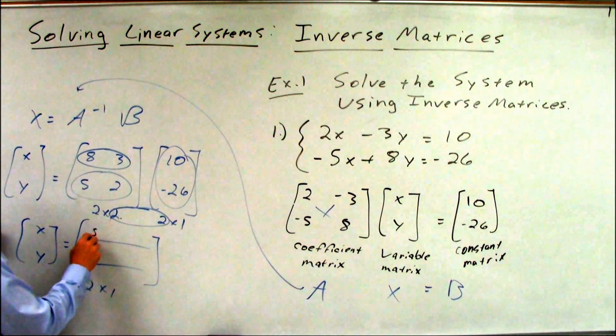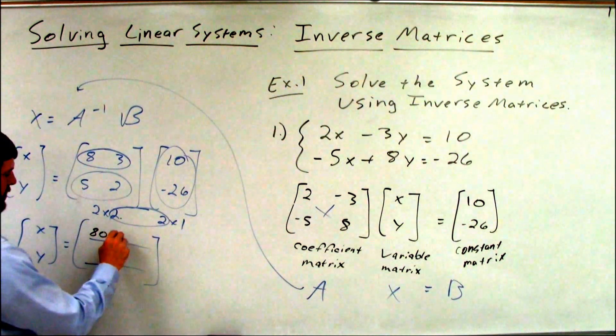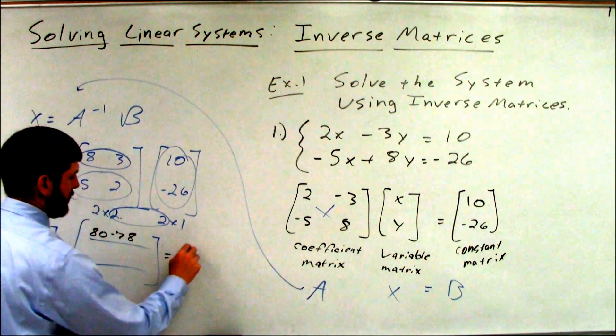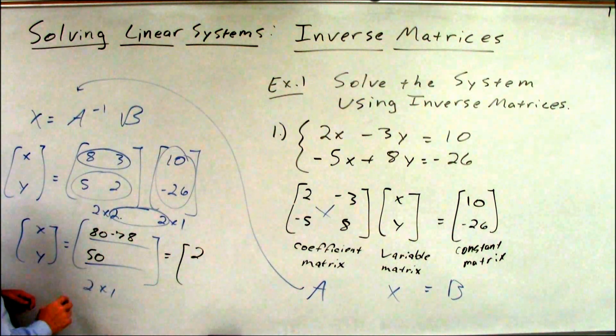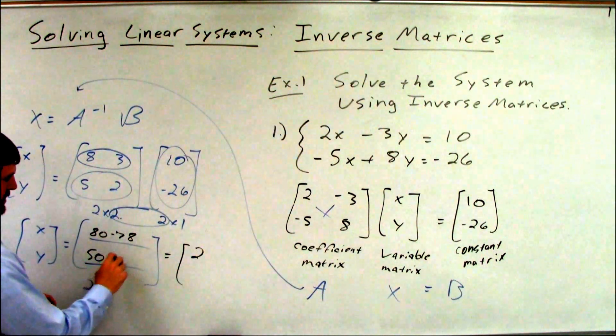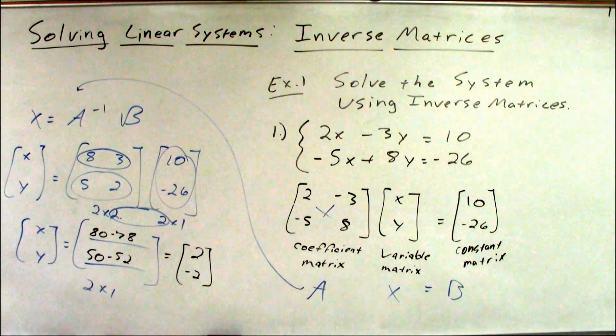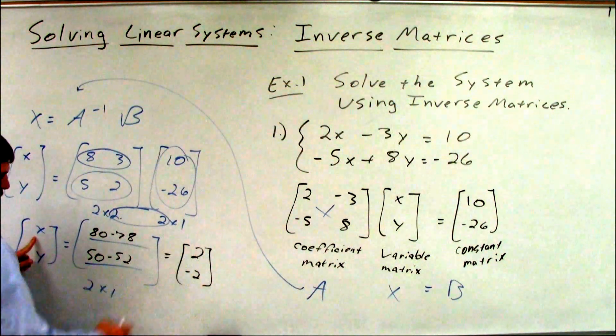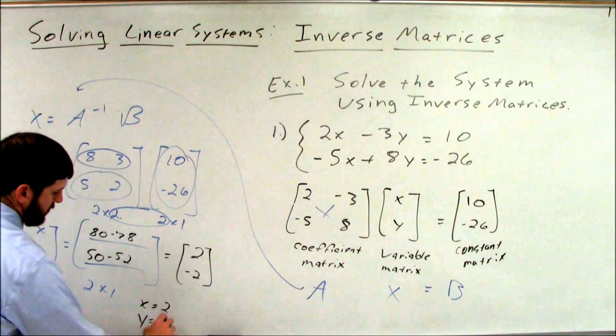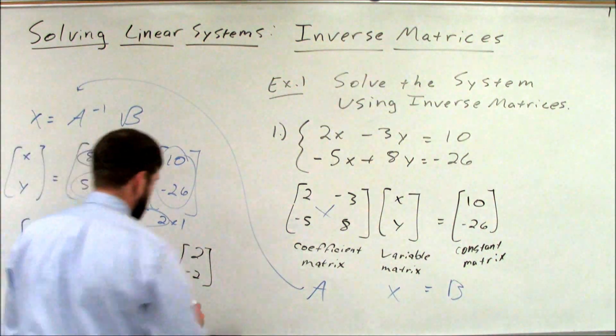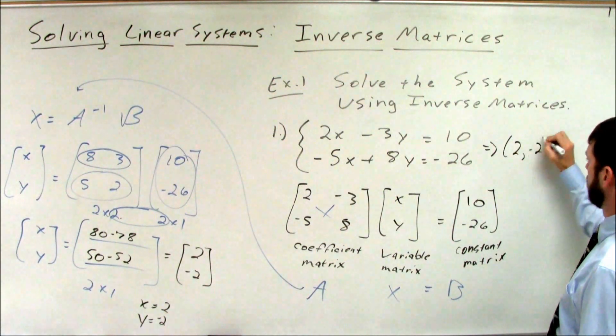8 times 10 is 80. 3 and 26 is negative 60, 78. So that's a 2. 5 times 10 is 50. 2 and negative 26 is negative 52. So that's a negative 2. The answer is not the matrix. The answer is x equals 2, y equals negative 2. Or we could write it as the ordered pair 2, negative 2.